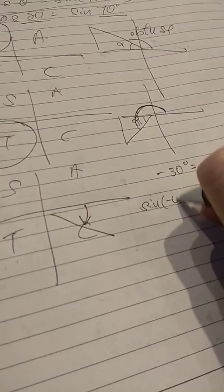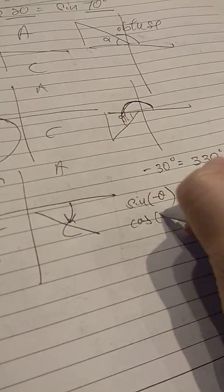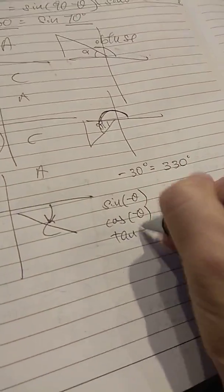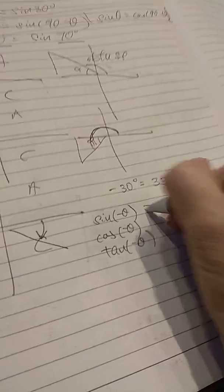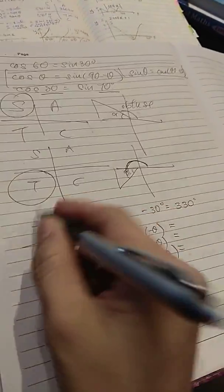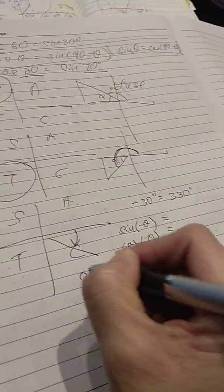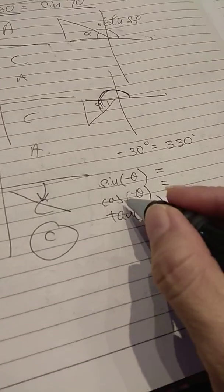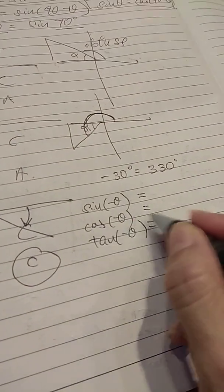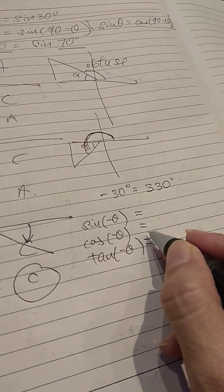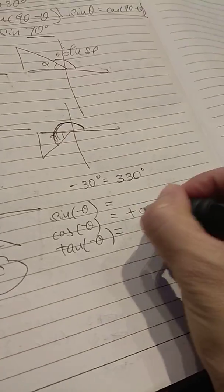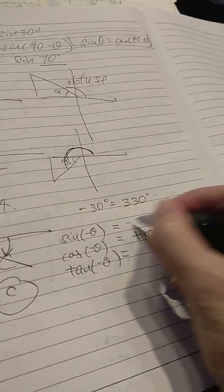So sine minus theta, cos minus theta, tangent minus theta is equal to what? ASTC. So only cosine is what? Positive. The other two are negative.